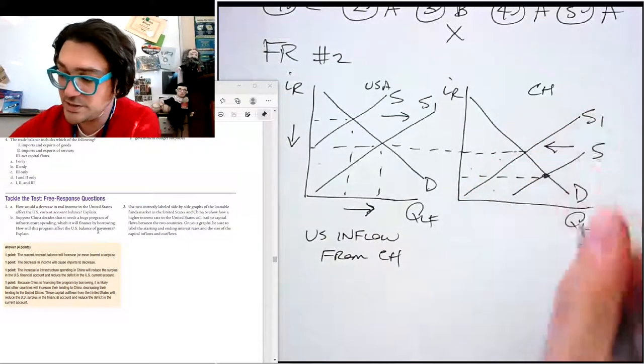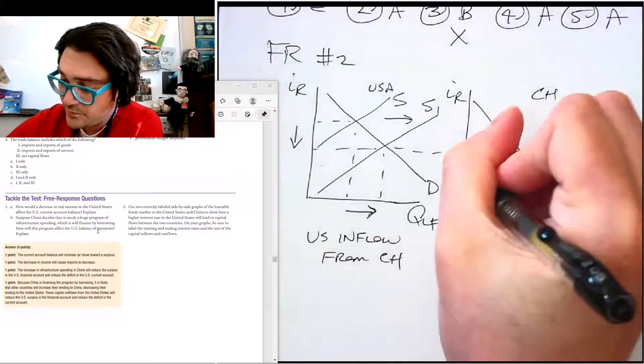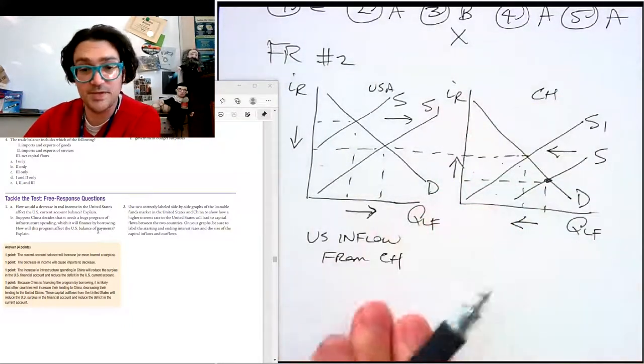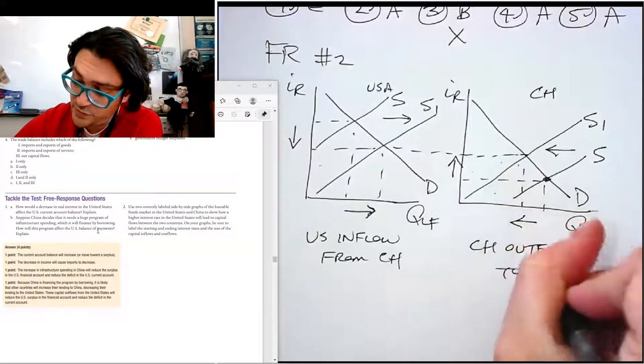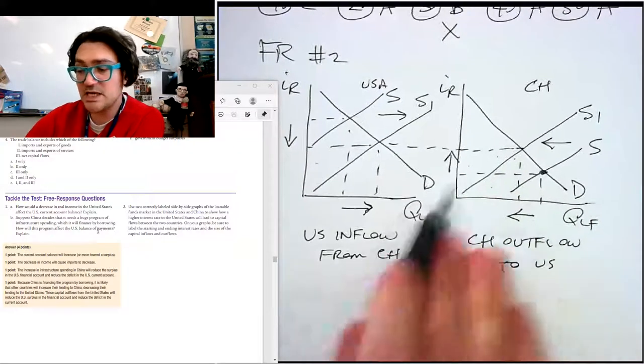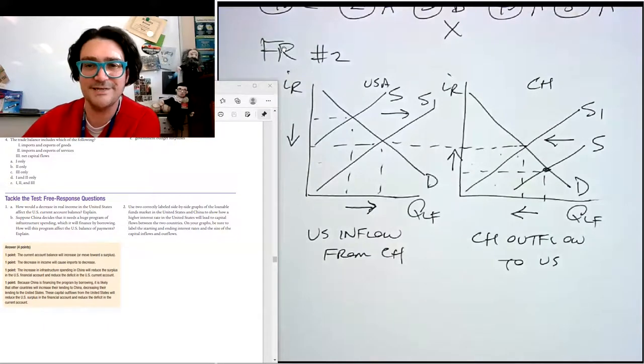And we want to extend that interest rate all the way over because the interest rates equilibrate. Translation, they will continue to shift until the interest rates end up being the same interest rate between them. So China has an outflow of money to the US. And we've indicated the sizes here and the relative shifts there. All right. Hopefully this helped you. See you next time.